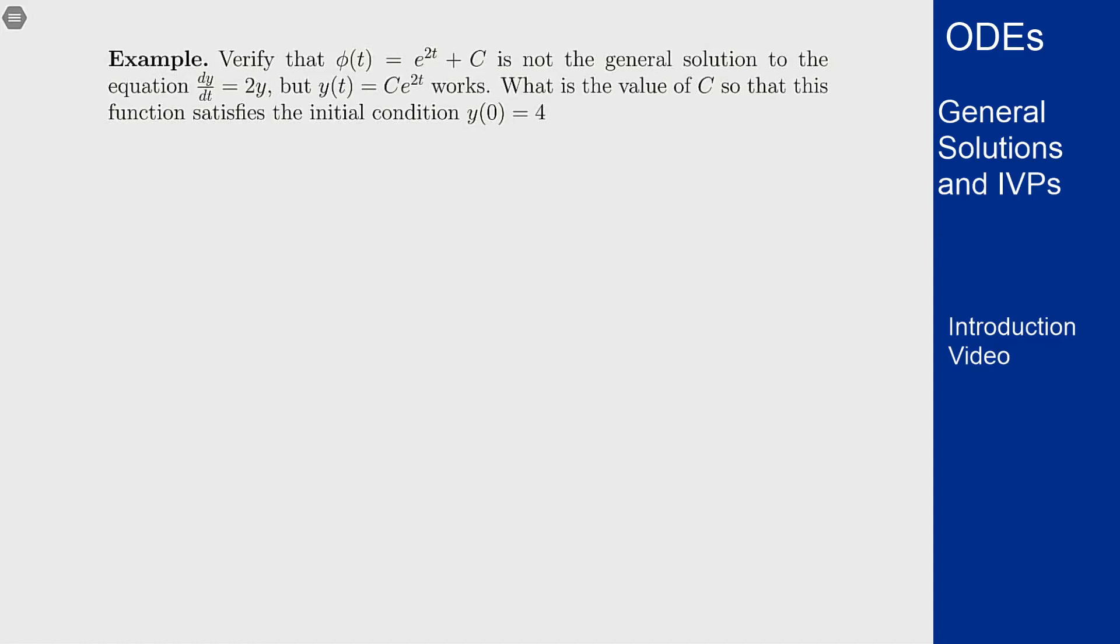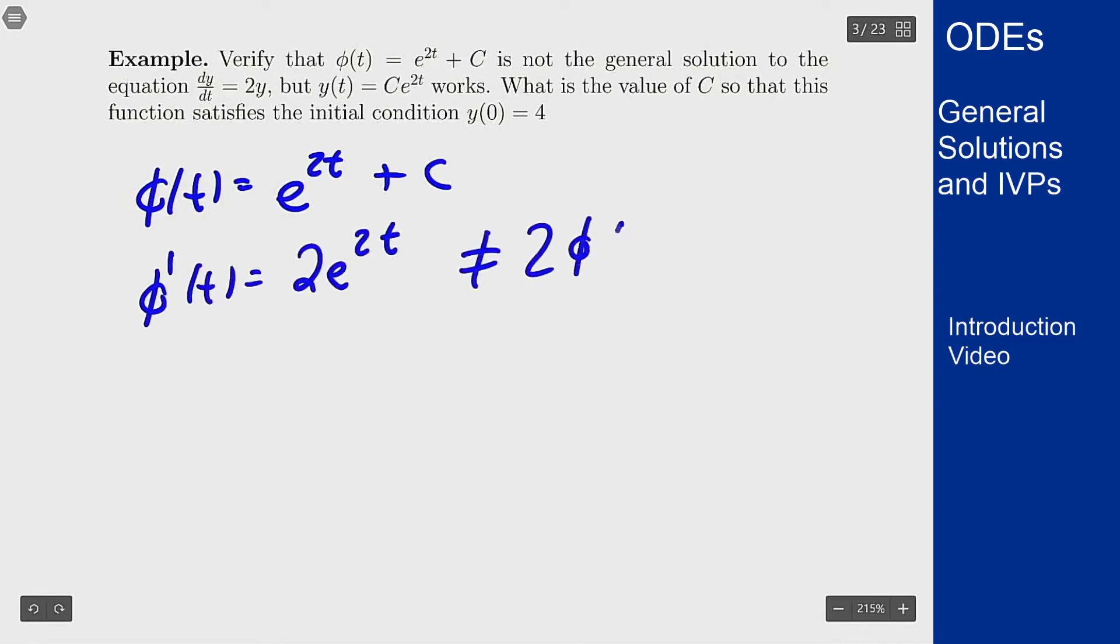So if I take the derivative of φ(t) so φ(t) = e^(2t) + c. φ prime is 2e^(2t) but this is not equal to 2φ because of that plus c that's there in the φ term doesn't show up in this part.